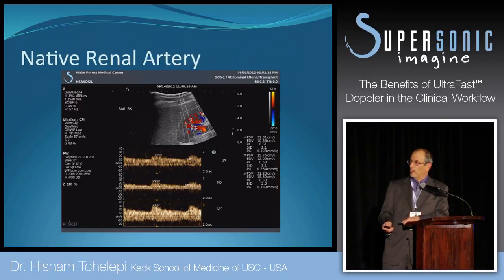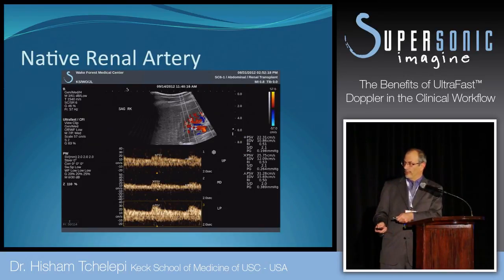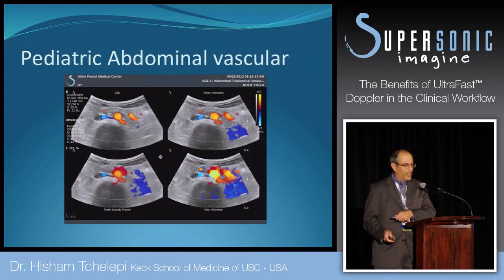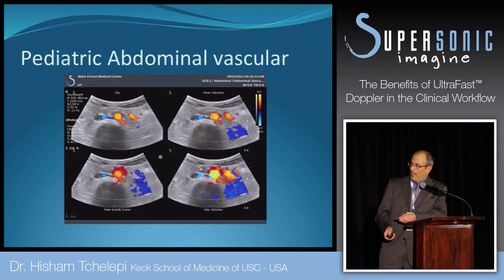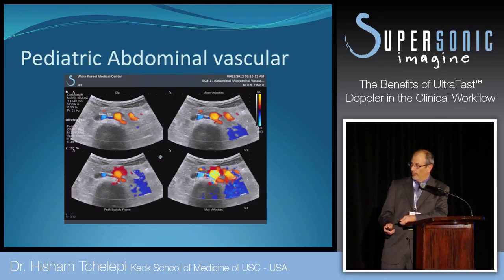From the same kidney in one sweep, we look at the intrarenal resistive indices — we can do the renal artery outside the kidney and the resistive indices inside the kidney at the same time. This is an eight-year-old child with hematuria that couldn't be explained. You can see data being picked up at different levels, including maximum velocity, peak systolic velocity, median velocity, and mean velocity — all available to go back and forth for measurements.